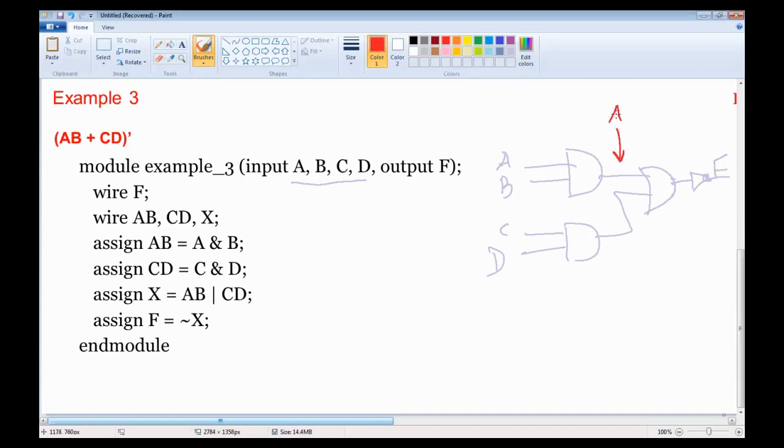Here we have the wire A·B and the wire C·D. And here the wires A·B, C·D, and X are declared. We assign the operation A and B to the wire A·B, the operation C and D to the wire C·D, and the OR from these two wires is assigned to the wire X. And finally, NOT X is assigned to the function F.